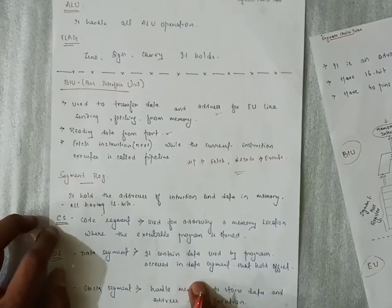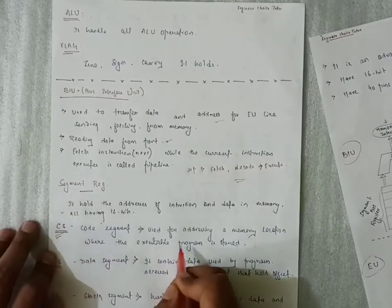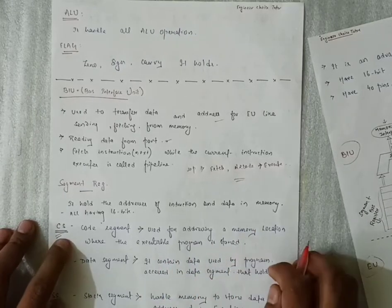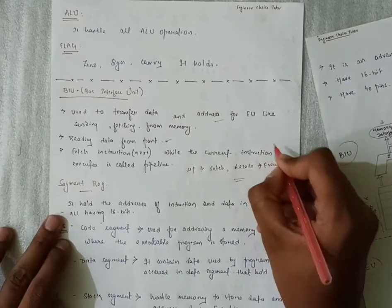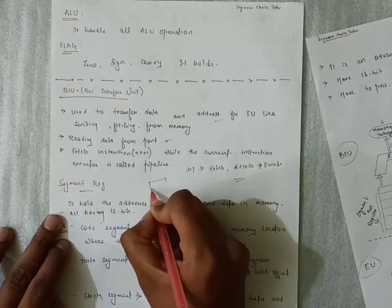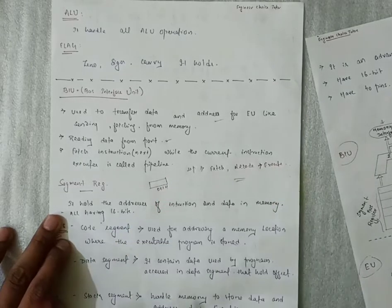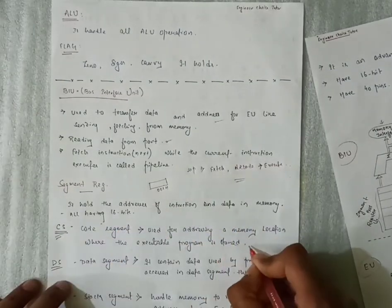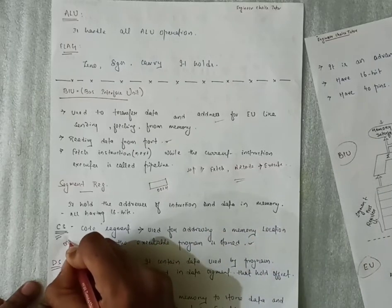The first one is our Code Segment, that is CS. It is used for addressing a memory location where the executable program is stored. It will store the first memory address — whatever the memory of any folder — suppose we have a memory, and the address of a folder is 0001 in hexadecimal form. So the CS value will be 001H.